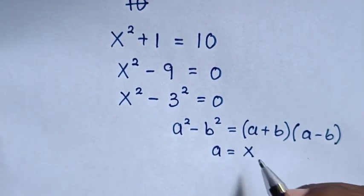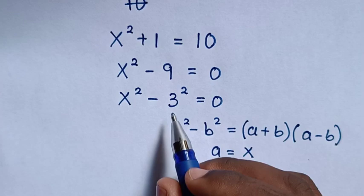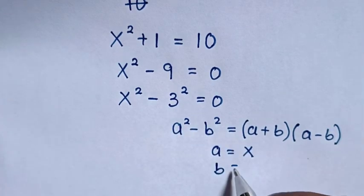then a is equal to x, and when you compare b² with 3², then b is equal to 3.